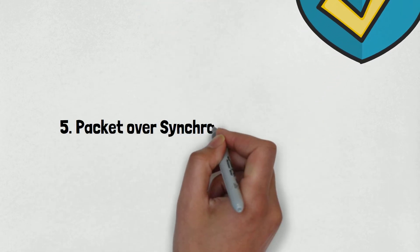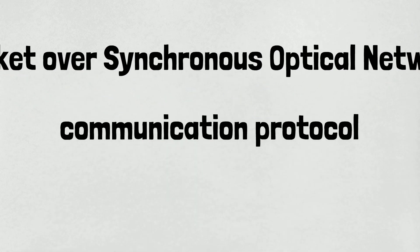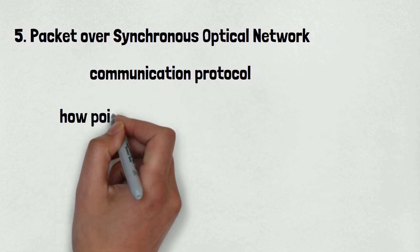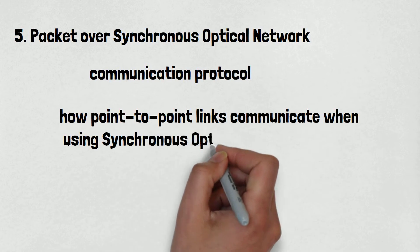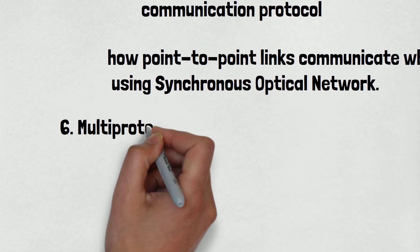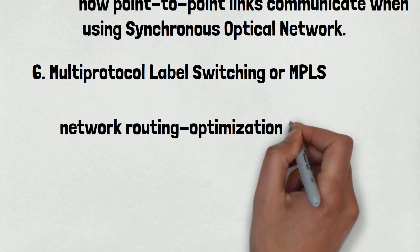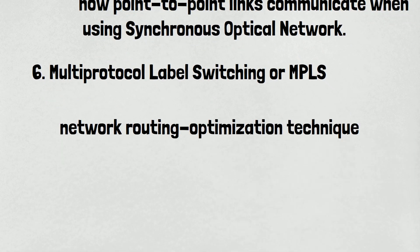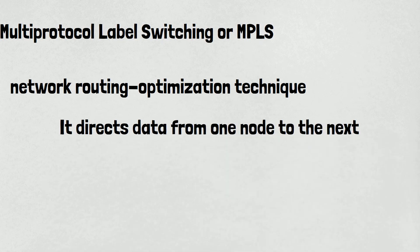Number 5 is Packet over Synchronous Optical Network. It is a communication protocol used primarily for WAN transport, and it defines how point-to-point links communicate when using a synchronous optical network. Number 6 is Multi-Protocol Label Switching, or MPLS. MPLS is a network routing optimization technique.